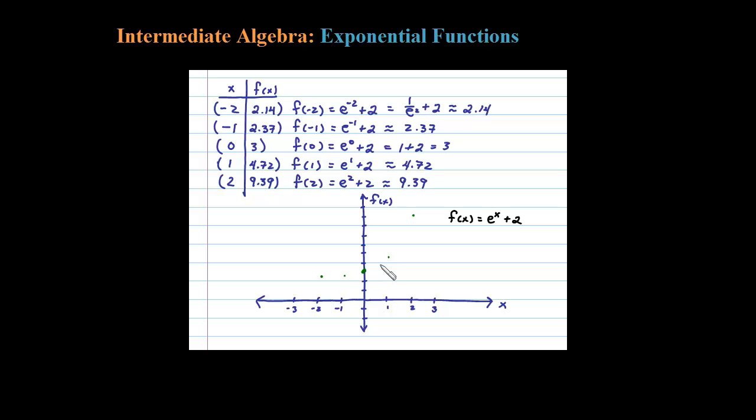Now let's try to determine that horizontal asymptote. Looking at the equation, you notice here when x is negative 5, for example, you'd have 1 over e to the fifth, which is a very small number. So it's going to be 2 plus a very small number.